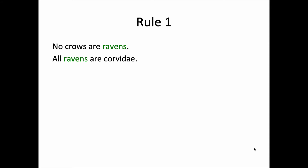Alright, so let's apply the rules one by one. If the argument fails to satisfy even one rule, then the argument is invalid. So rule number one: we're going to apply it to the middle term. Notice that the term ravens has been highlighted in the premises. Rule number one says the middle term must be distributed at least once.